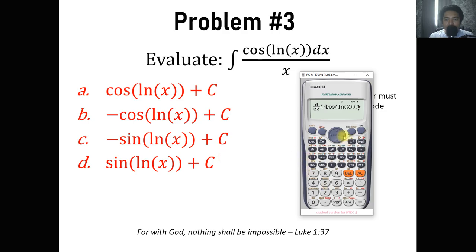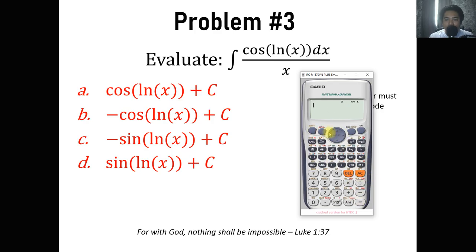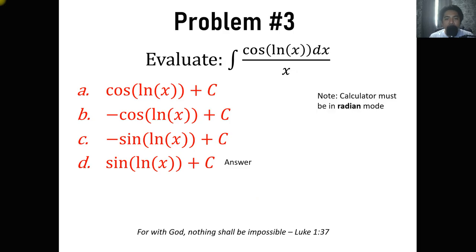The difference between choices A and B is that B has a negative sign, so try negative cosine of ln(x). Store to B and compare: A divided by B should equal 1, but it doesn't. For letter C, replace cosine with negative sine of ln(x), solve at x equals 0.1, store to B, compare A divided by B — it gives negative 1, not 1, so it's not the answer. For letter D, use sine of ln(x) without the negative, store to B, compare A divided by B — that gives 1. So the answer is letter D.